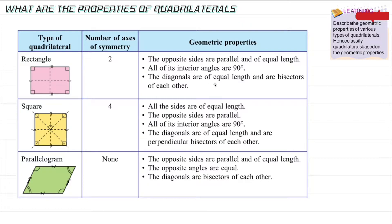The diagonals of a rectangle are of equal length and are bisectors of each other. 'Diagonal' means the line going across here. All these diagonals have the same equal length, and being a bisector of each other means the diagonal cuts or divides the two sides equally.